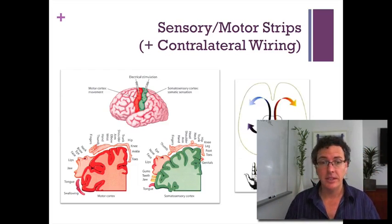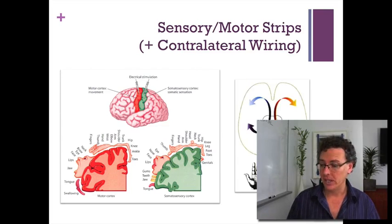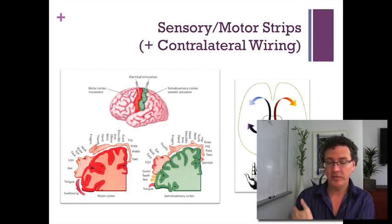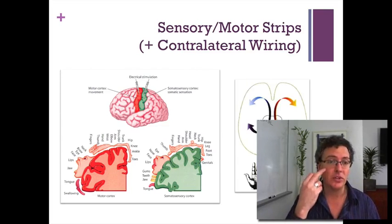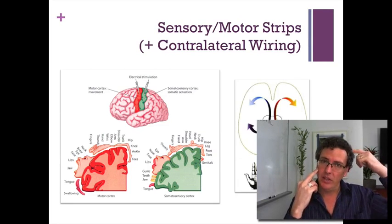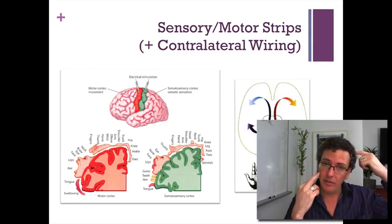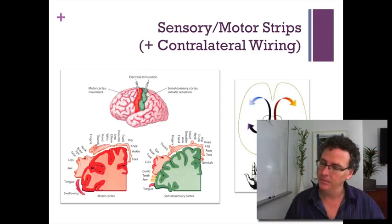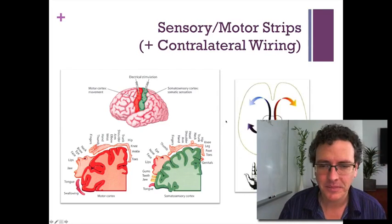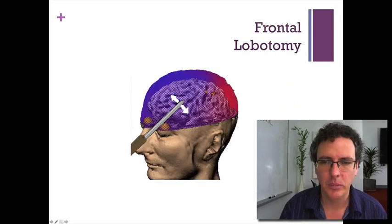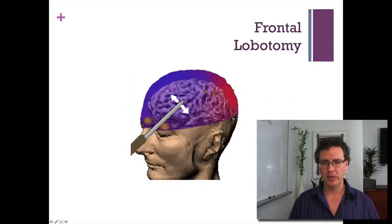Again, no explanation — that's just how it is. It's true of both the motor and sensory strips. If I touched your right cheek, I would see activation in your left sensory strip. Weird contralateral wiring — and that'll become relevant when we talk about split brain patients.